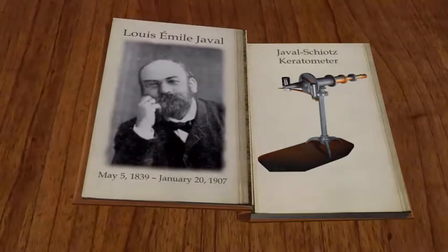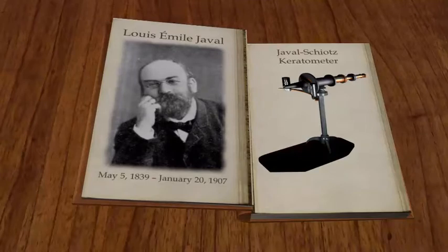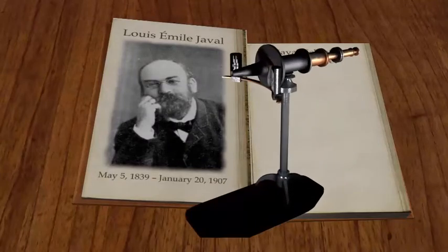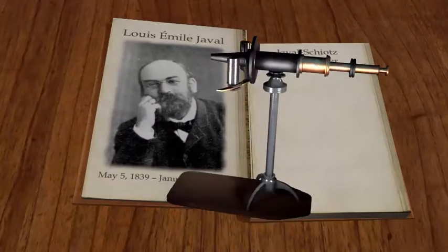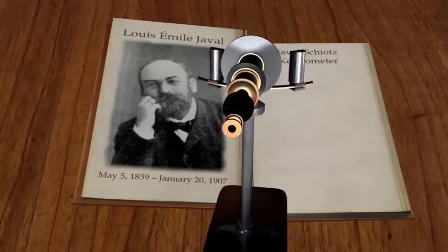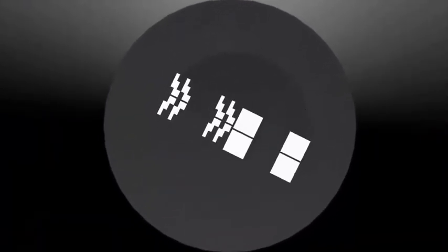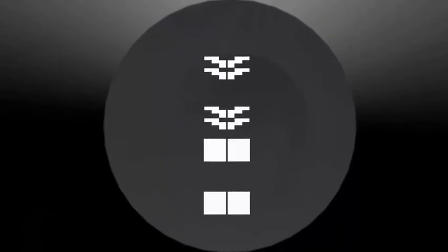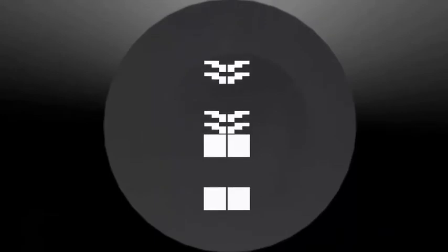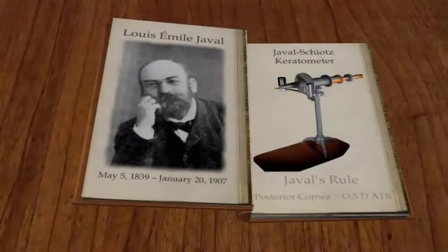Louis-Emile Javal was a well-known 19th century ophthalmologist practicing in Paris. He first noted that he could not account for total ocular astigmatism by simply measuring the power of the anterior cornea with his newly invented Javal-Schiötz keratometer. This phenomenon is known as Javal's rule and is thought to be due to the posterior cornea contributing, on average, half a diopter of against-the-rule astigmatism.